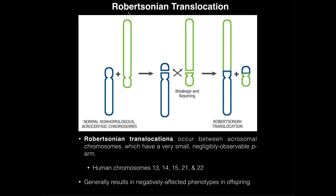In this video, we're going to talk about Robertsonian translocations — what causes them and when they're likely to occur — and then talk about a genetic condition, Down syndrome, which can be produced as a result of a Robertsonian translocation. Before we go into this, I want to mention that Robertsonian translocations are actually a pretty rare cause of Down syndrome, only about two to four percent of cases.